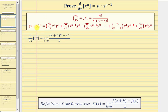So if we have the quantity x plus y raised to the nth, the binomial theorem gives us this expansion. Notice how the first term would be n choose zero times x to the nth times y to the zero, plus n choose one times x to the power of n minus one times y to the first.